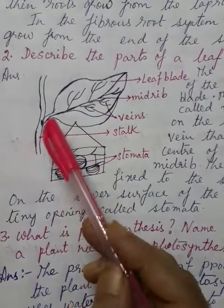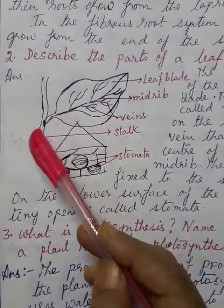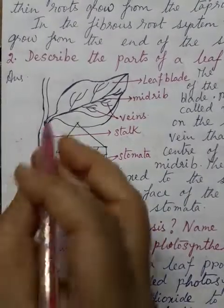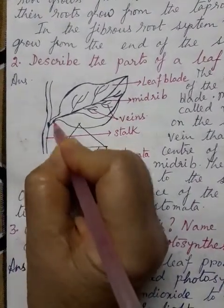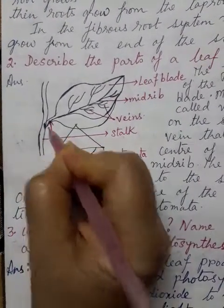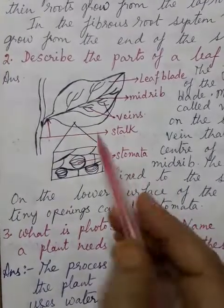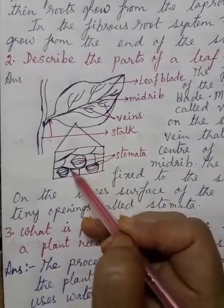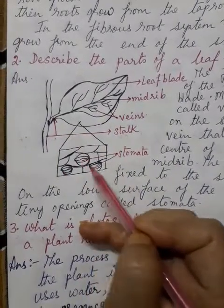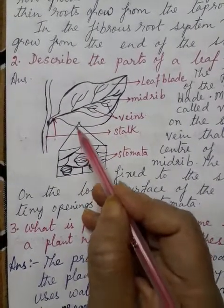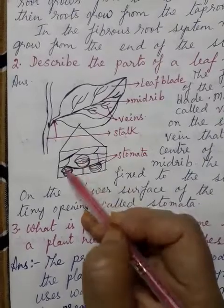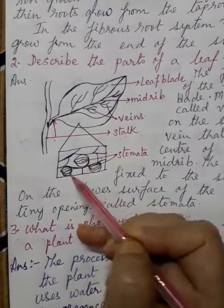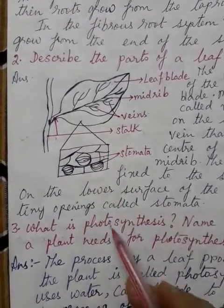The leaf is attached to the stem by the stalk — this is the stalk. On the underside of the leaf lie small holes called the stomata. Here it is just magnified and shown — the small holes are the stomata.